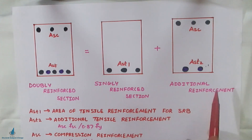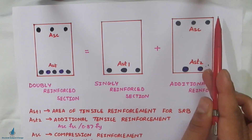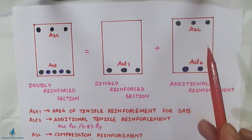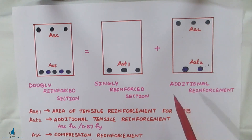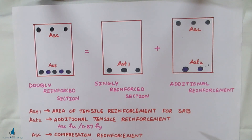The excess moment is carried by the additional tensile reinforcement and the compression reinforcement in the compression zone. That was the complete overview of doubly reinforced beams. If you found this video helpful, please like, share, and subscribe to All About Structural Analysis and Design, and press the bell icon for the latest notifications on civil and structural engineering videos.